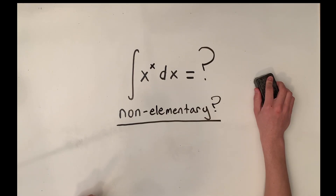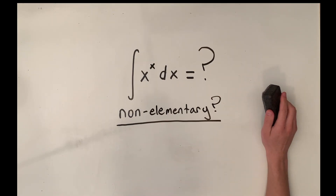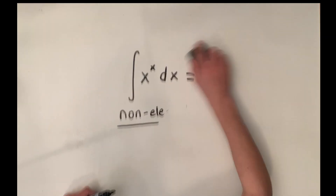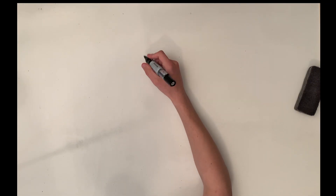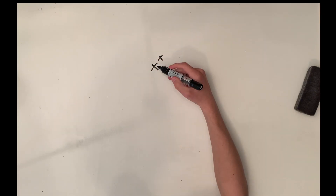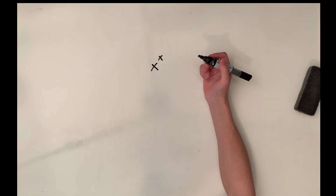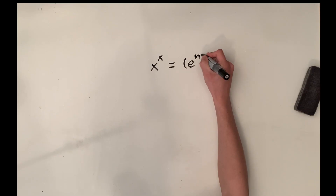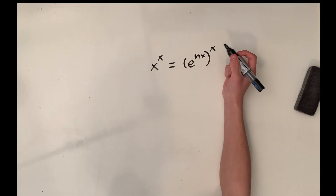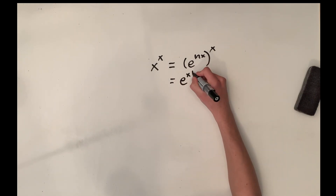What we're going to do is try to integrate this function and write our answer in terms of the gamma function. The first thing to note is that x to the x, since we have a growing base and a growing exponent, is not easy to work with. So let's write it in terms of base e. We can write x to the x in base e as e to the ln(x) raised to the x power, and then simply multiply our exponents to get e to the x·ln(x).